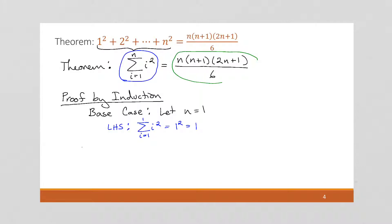And then we look at the right-hand side of the equation. And we're going to have 1 times (1 plus 1) times (2 times 1 plus 1) all over 6. This becomes 1 times 2 times, this last part is going to be 2 plus 1 is 3, over 6. This gives us 6 over 6, which cancels and gives us 1. So since the base case, both parts evaluated the same answer, our base case holds.